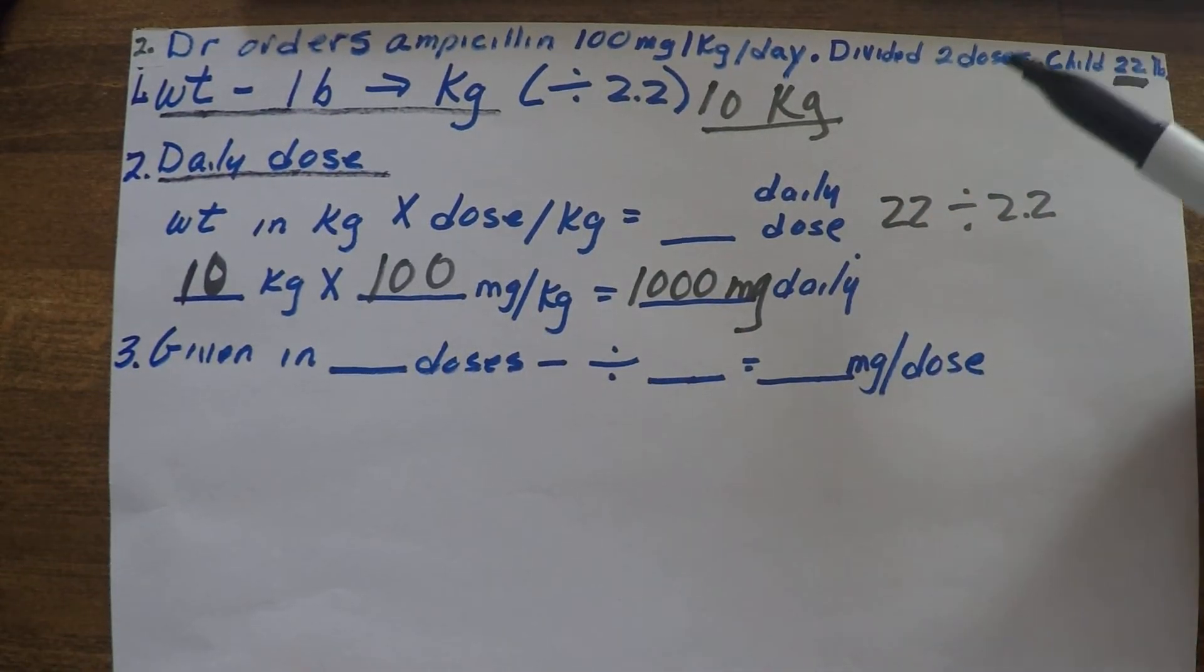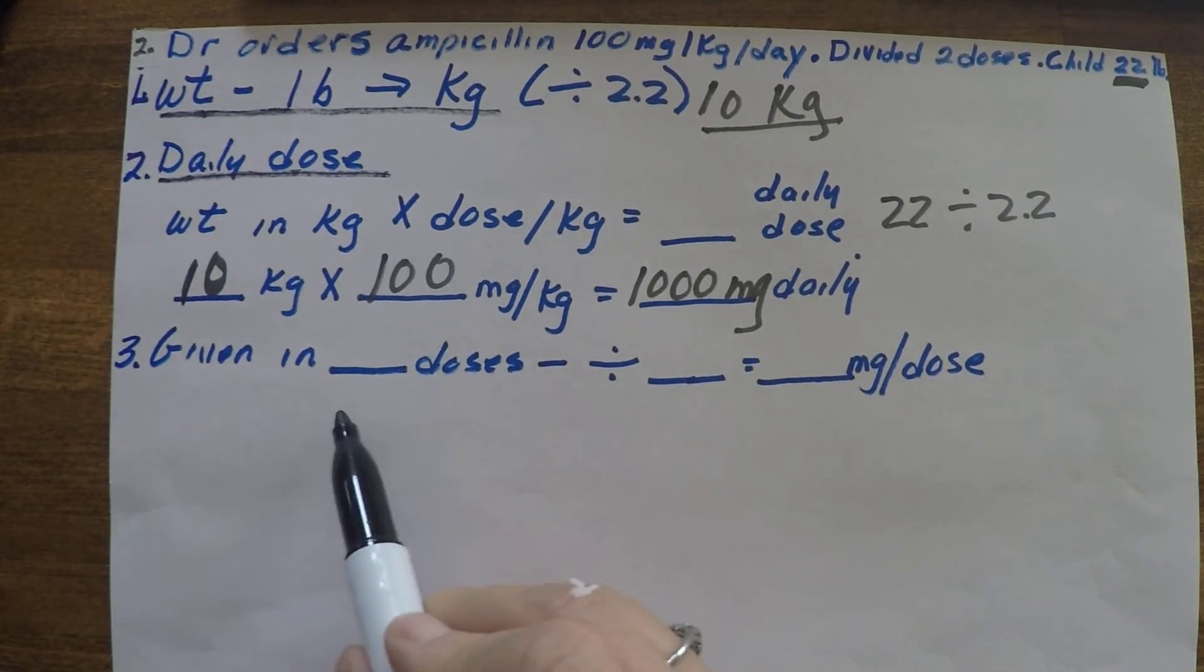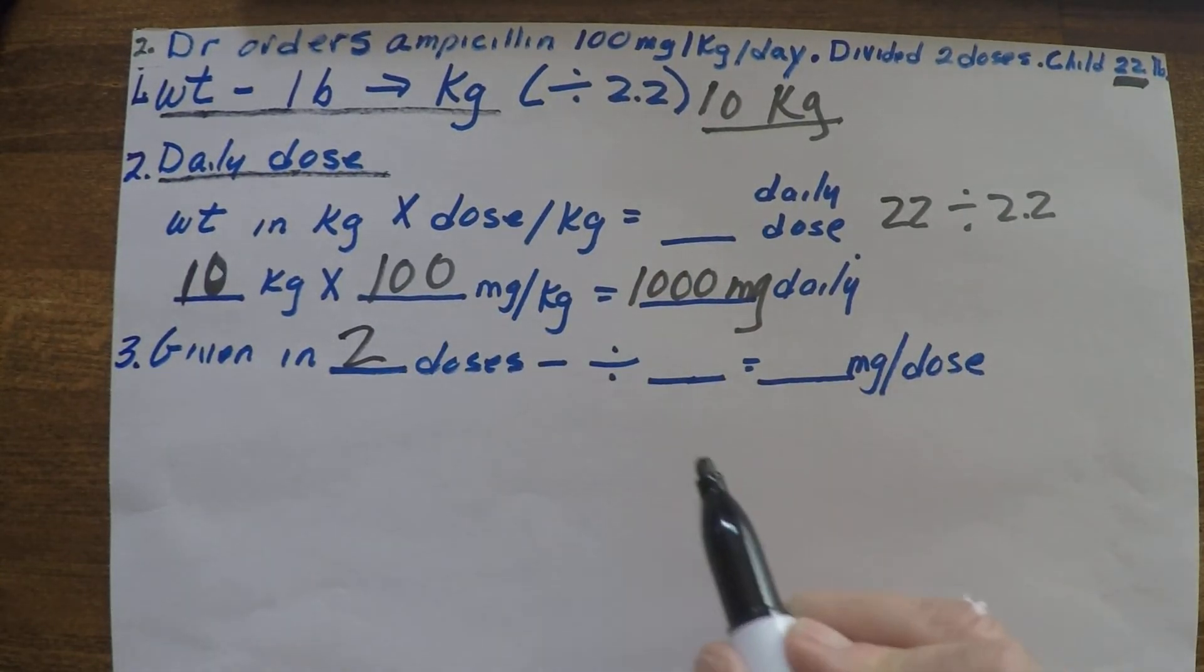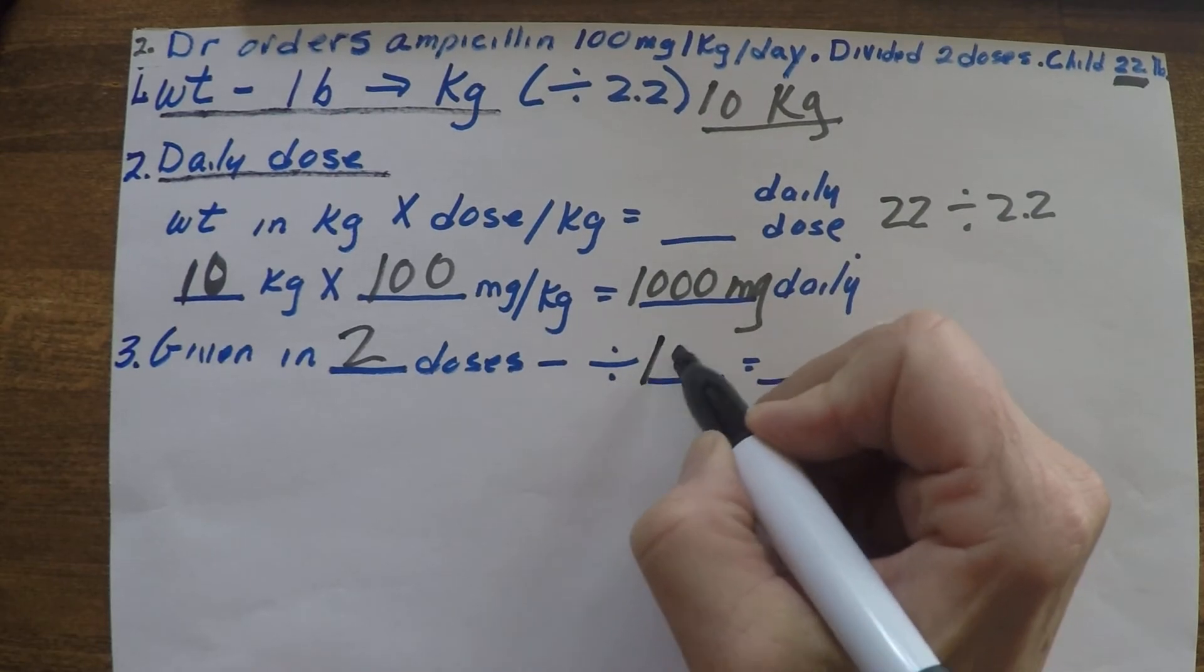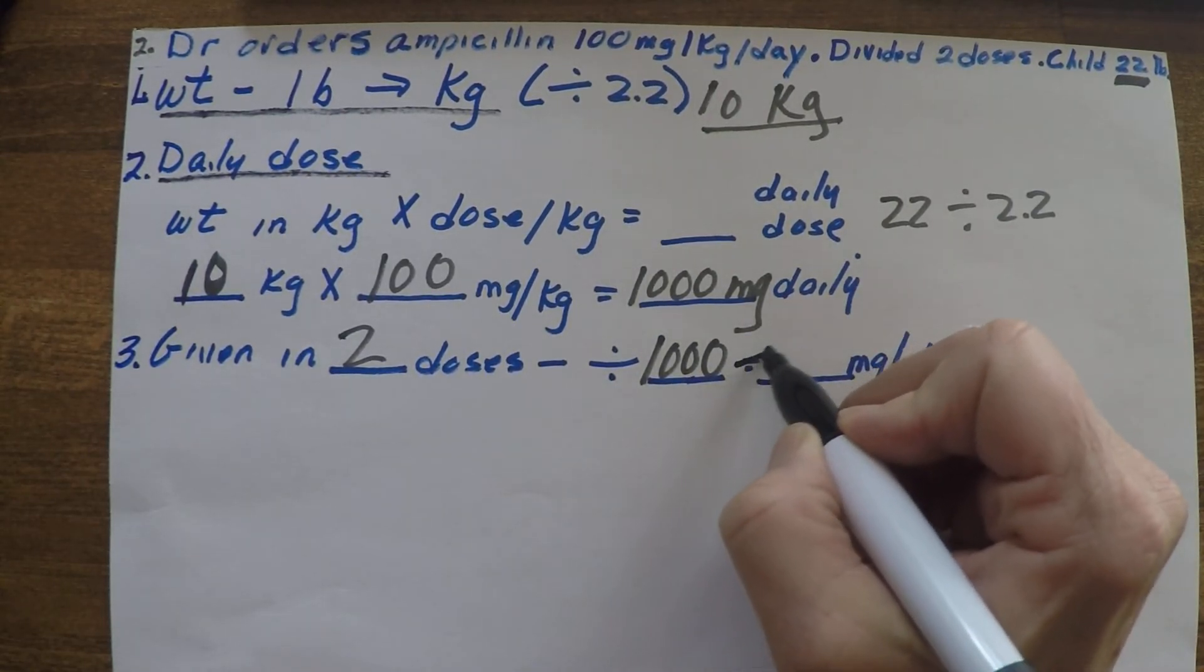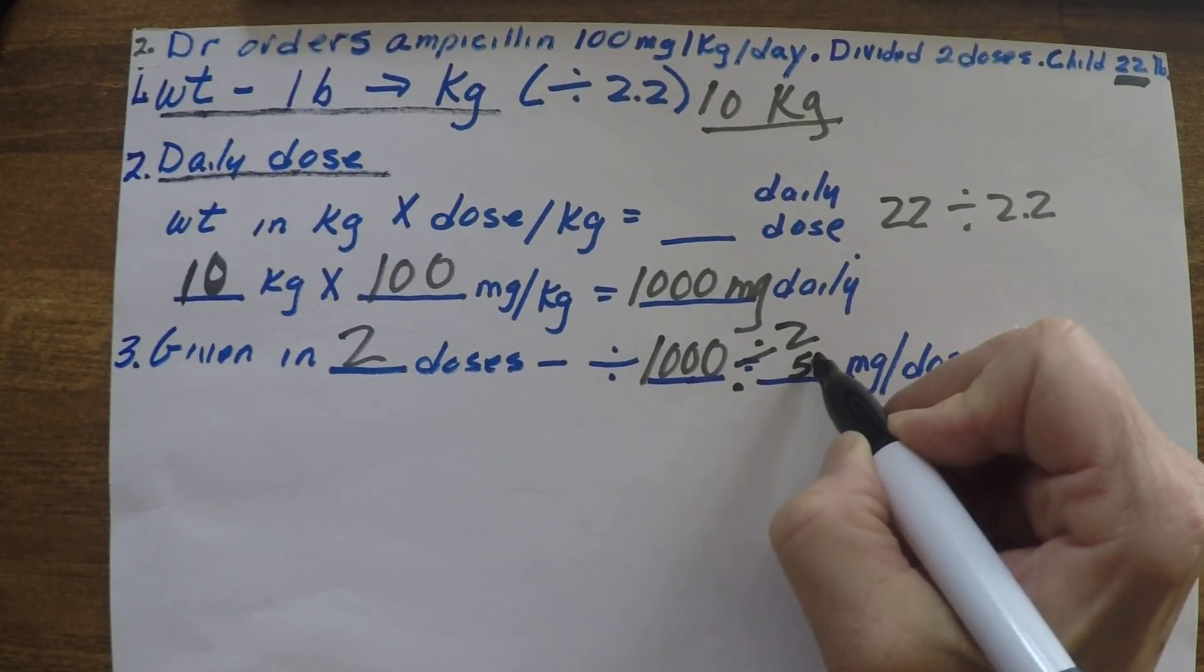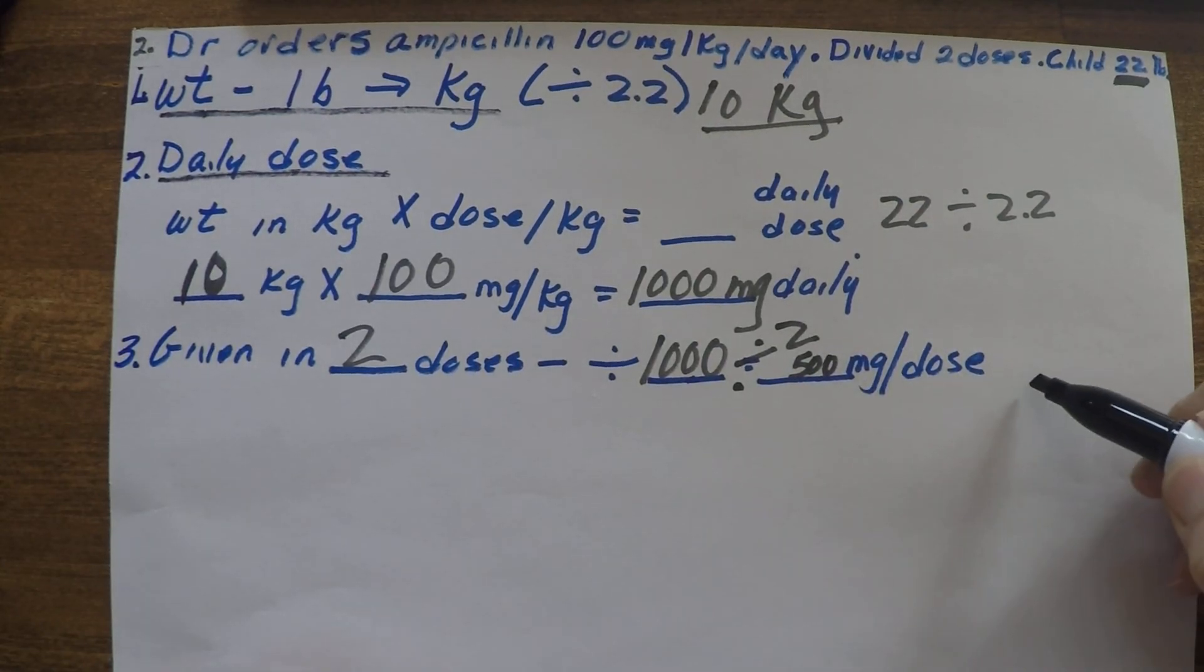So this says it's divided into two doses, and they want to know what the individual doses are. So given in two doses, we will divide our 1000 milligrams divided by two, and that's going to give us 500 milligrams per dose.